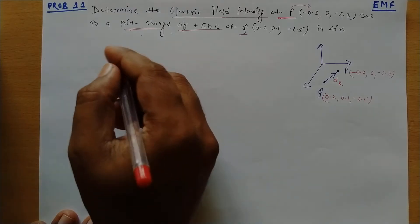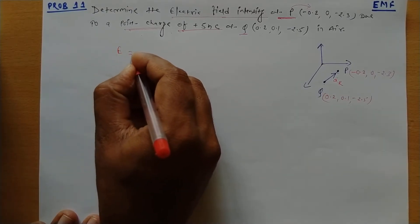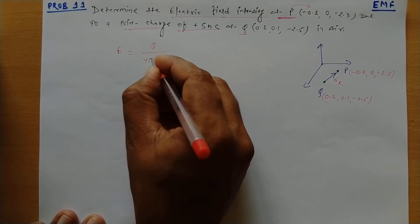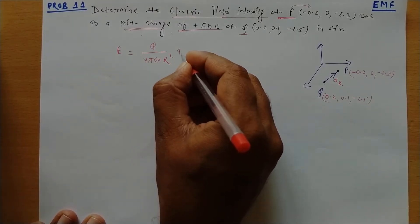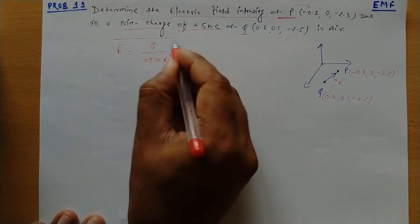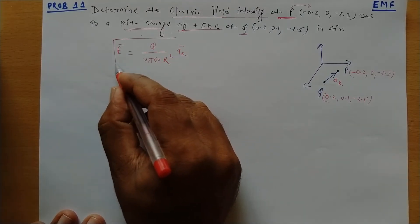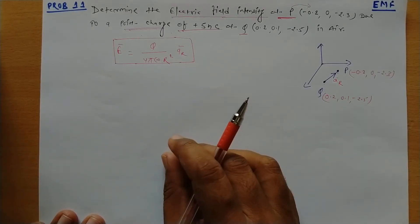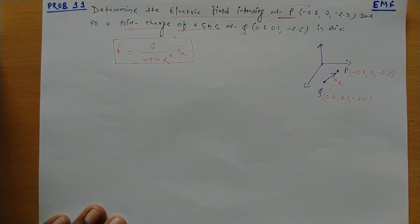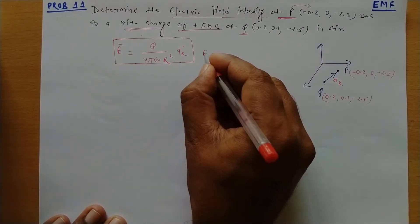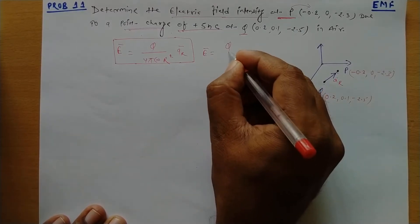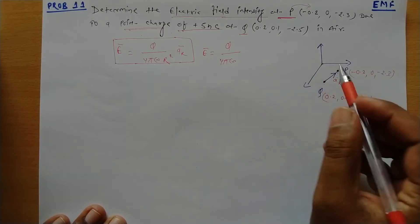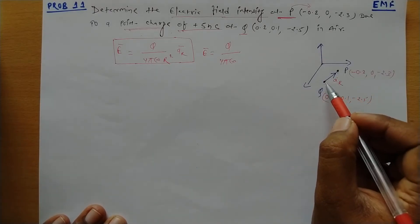As we know, the expression for electric field intensity due to a point charge is given as E = Q / (4πε₀ × R²) × AR. Using this equation we can find the electric field intensity at a certain point due to the point charge. Here, we write electric field intensity equal to Q / (4πε₀), and we need to find the intensity at point P due to charge Q.